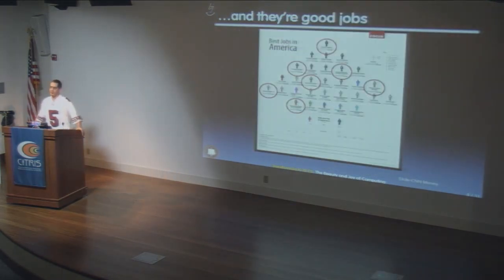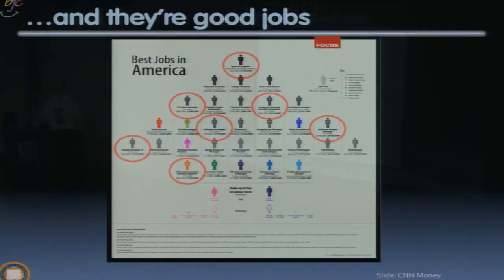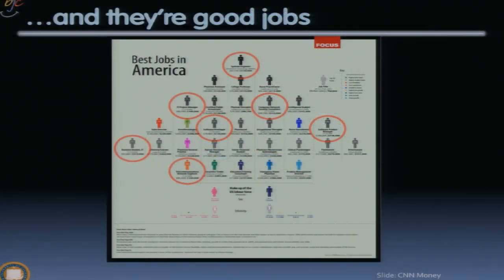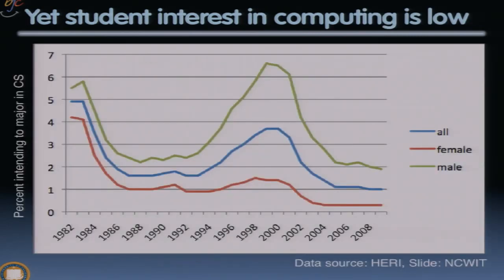The jobs are good jobs. Young people want to be doctors or lawyers, but the best jobs in America — according to CNN Money, ranked by happiness, income, and flexibility — are all computing-related: systems engineer, IT project manager, network software manager, business analyst. All the circled ones are computing jobs.